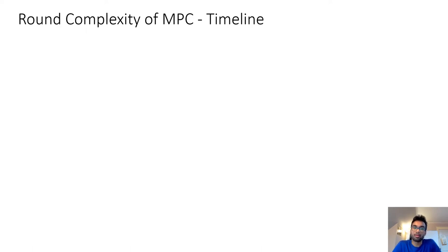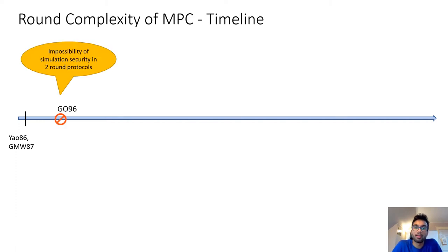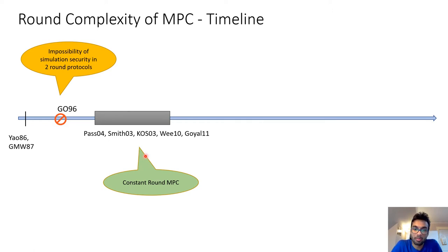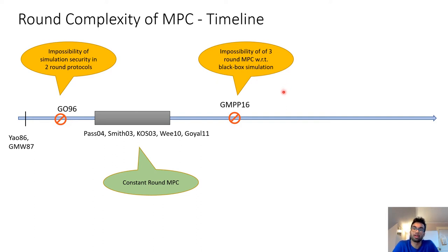Let me give a brief timeline of progress in the round complexity of MPC. In the 80s, we have Yao's two-party garbled circuits protocol and the polynomial-round protocol in the MPC setting by Goldreich, Micali, and Wigderson. In 1996, Goldreich and Ostrovsky showed the impossibility of simulation security in two-round protocols. Then there was a line of works by Pass, Smith, Katz, Ostrovsky, Smith, and Goyal showing how to do constant-round MPC. In 2016, there was an impossibility result by Garg, Mukherjee, Panday, and Polychroniadou, building on the earlier result by Katz and Ostrovsky, which showed that three-round black-box simulation for MPC is impossible.